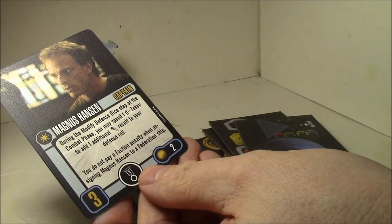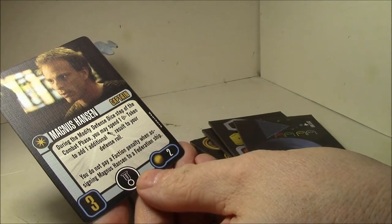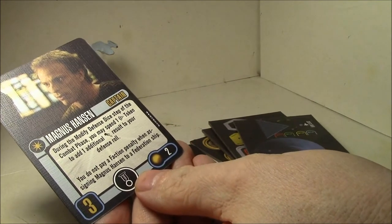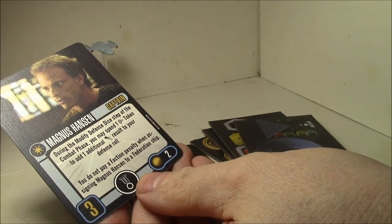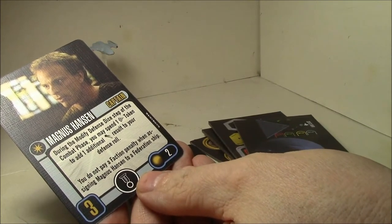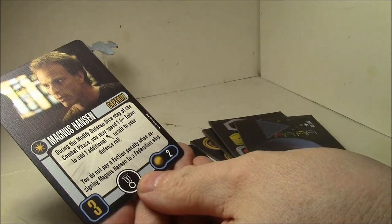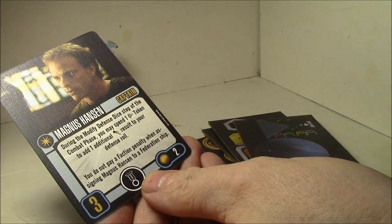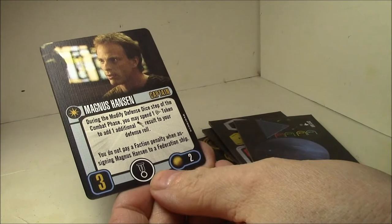So you spend a scan token to gain an additional evade result. It's basically you take a scan and you get an evade out of it, which is pretty cool. If you get something that gives you like a free scan token, like that flagship, you take the scan token and evade, it gives you basically two evades.